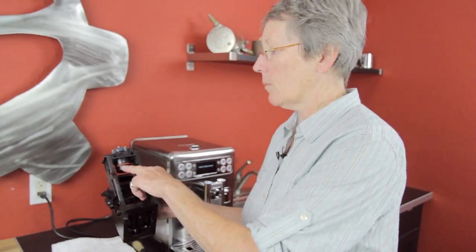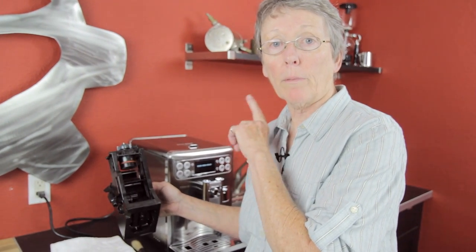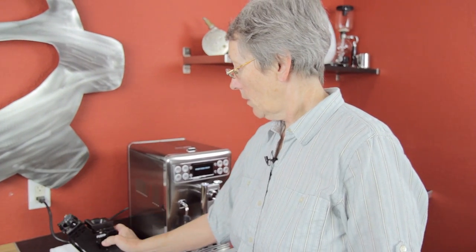That comes in the maintenance kit as well—a couple of O-rings in there for you, plus some other products. That's how you take care of your brew unit. It's really important; that's one of the major pieces of that machine.